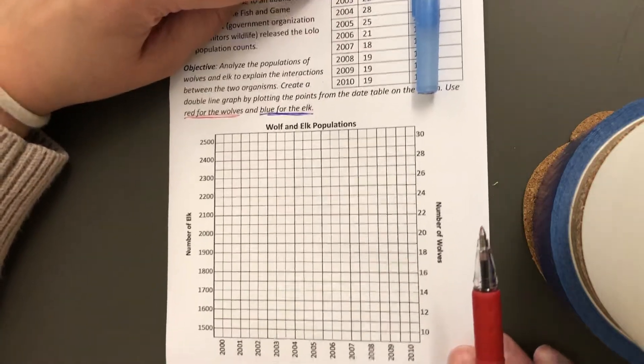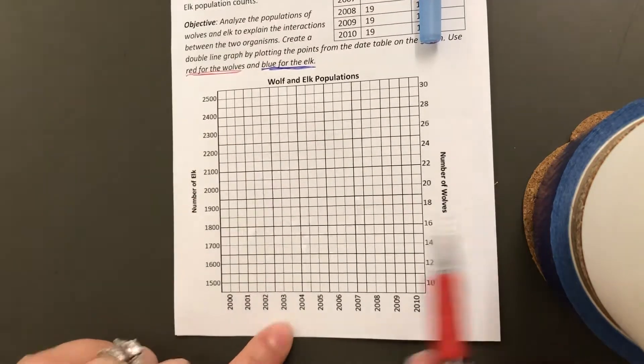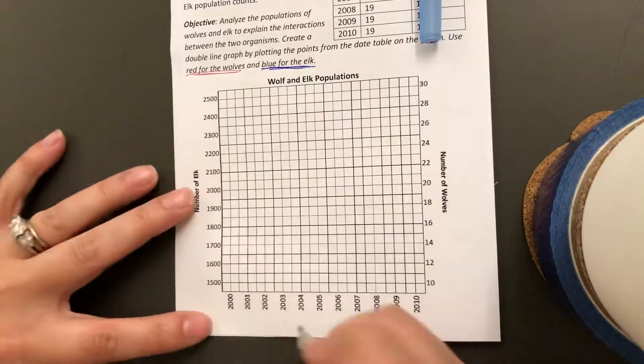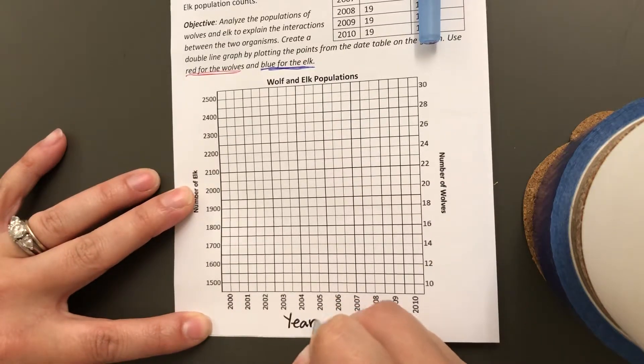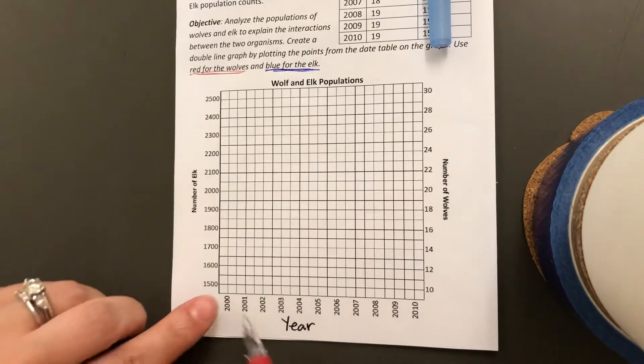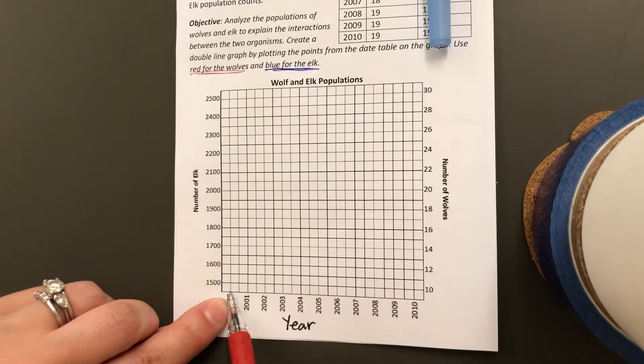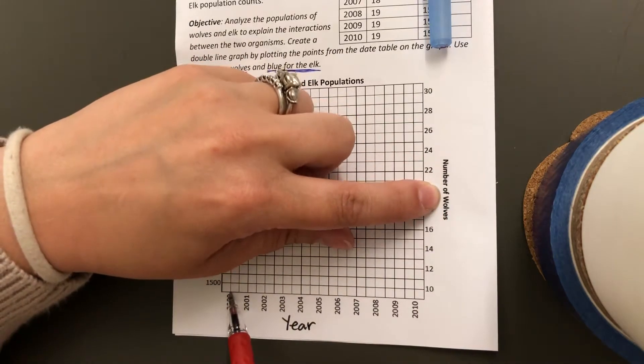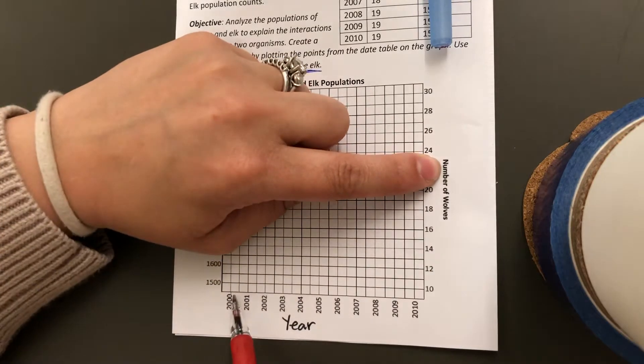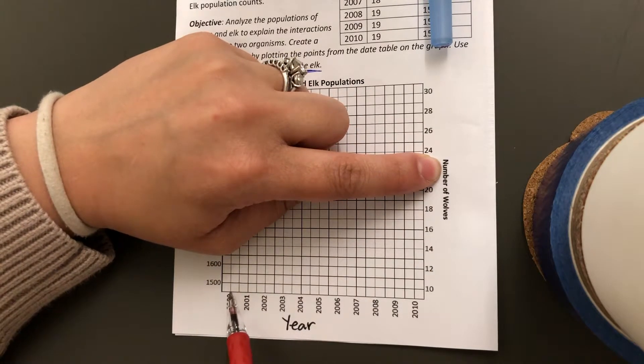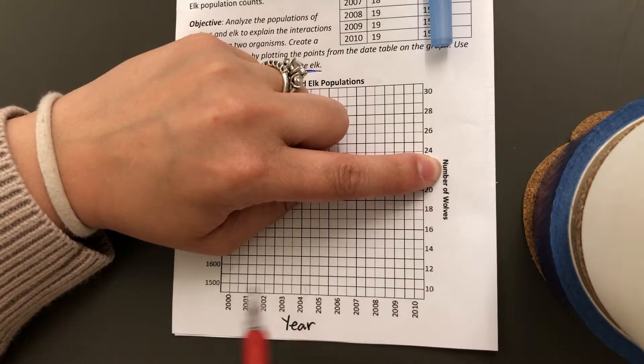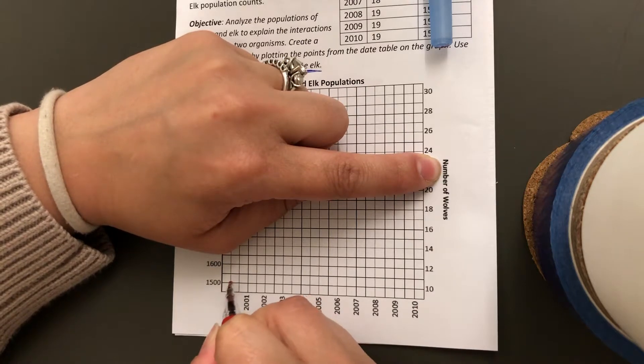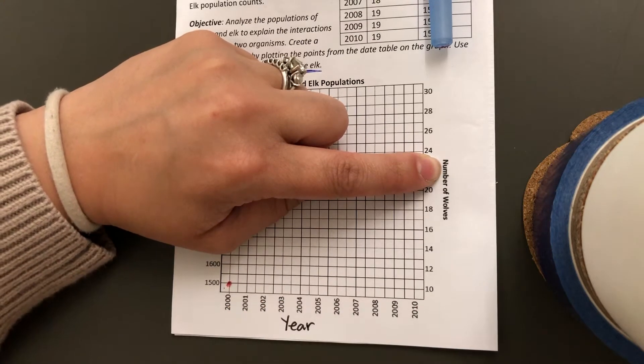So on my graph, I'm going to find that these are the years, and in the year 2000, the population of wolves was 10. So I'm going to go up at 2000 to where it says 10 and make a dot.